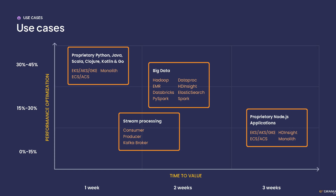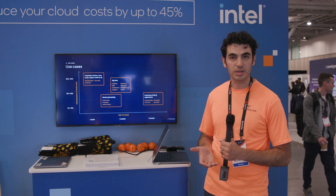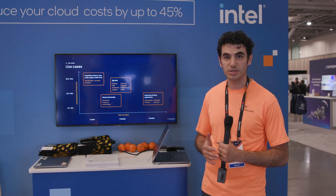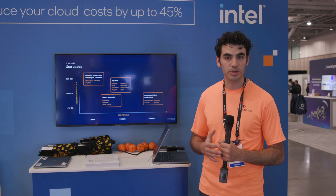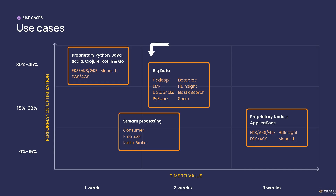The use cases where we see the most improvement include API-based workloads — JVM-based workloads, Python and Go — where with a one-week learning period, we typically see improvements of 30 to 40 percent at the application layer. Another area with strong improvements is big data workloads, which are JVM-based Spark workloads. The learning period is a little bit longer, about two weeks, but we are able to return typically 25 to 30 percent performance improvement, reducing the job completion time of these workloads, which in turn reduces cost.